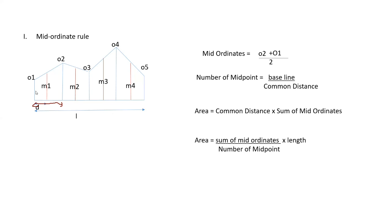In the mid-ordinates method, the key is that the ordinates must be at equal spacing. There is a common distance. Once you have the total length, the number of midpoints equals the base line divided by the common distance. The length divided by the common distance gives you the number of midpoints you need.